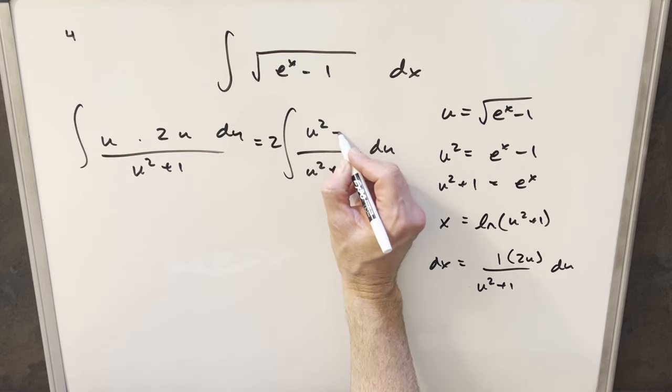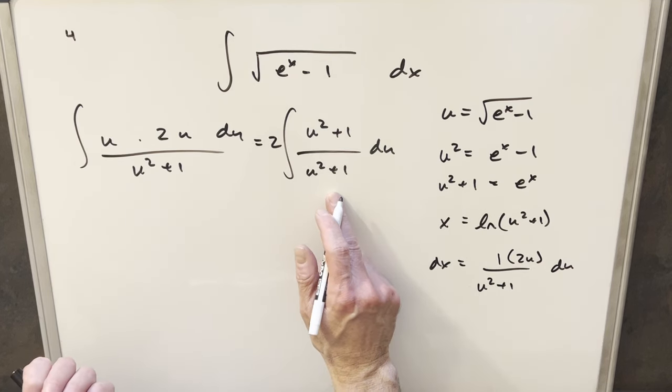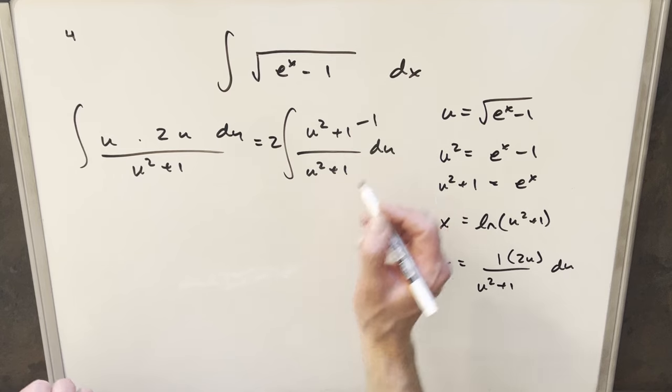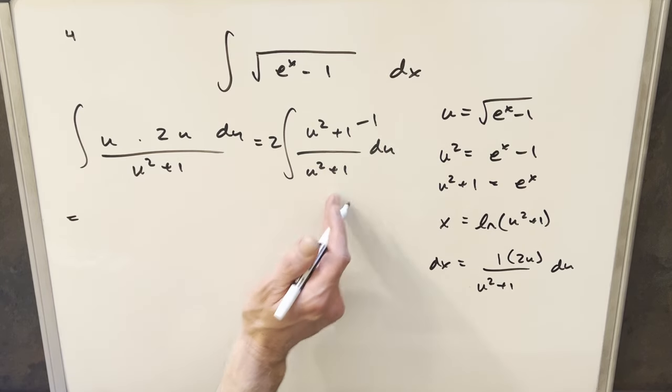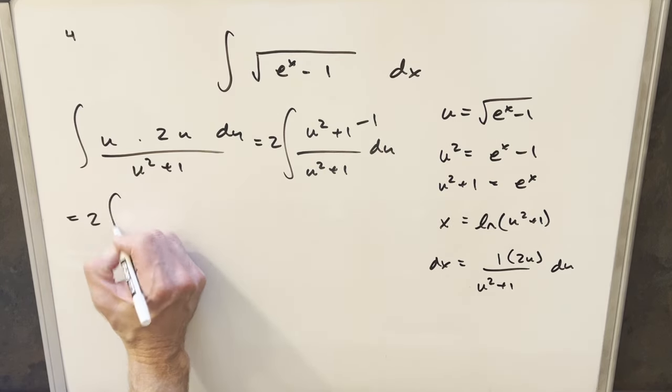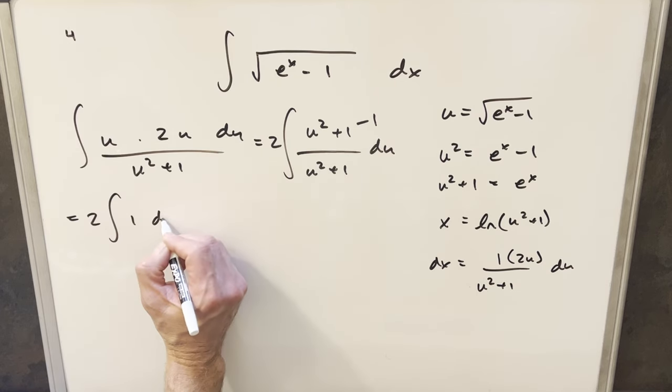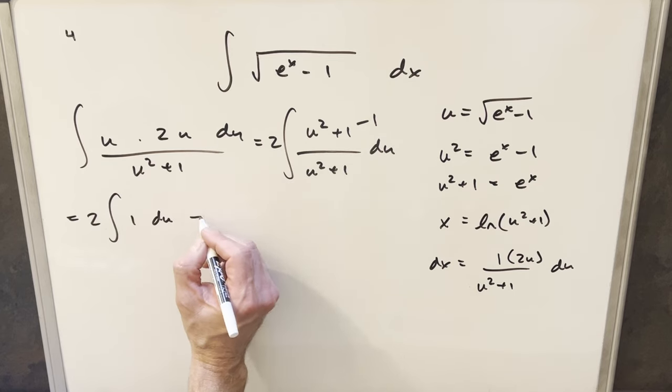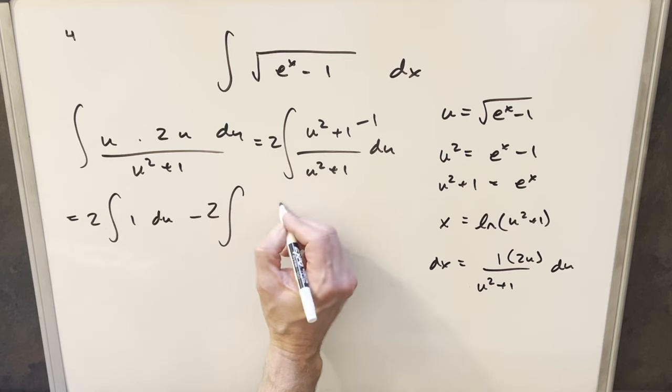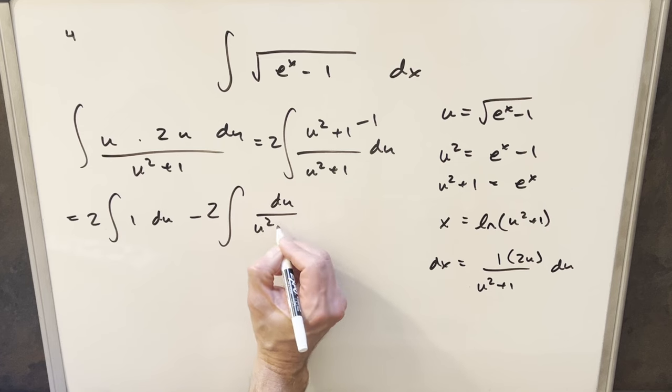The way I like to do this, if I add a one to this, then we're just integrating one, but we don't want to change it, so I'll subtract one. So then rewriting that, I'm going to split this into two integrals. So the first one is just going to be two times, this here is just going to become one du. Distributing two to minus one gives me minus two of du over u squared plus one.